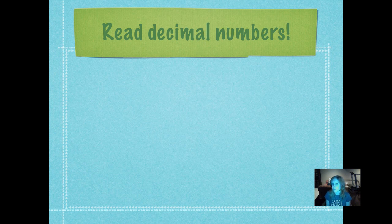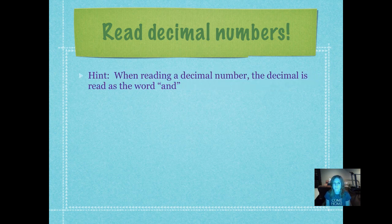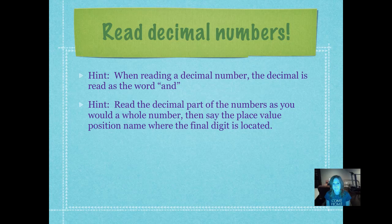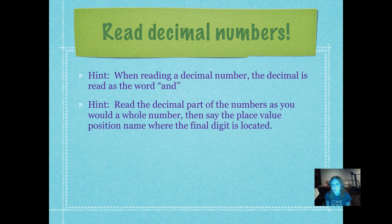We're going to learn how to read a decimal number. Here's a hint: remember when we were doing whole number place value and I said never use the word 'and'? The 'and' actually represents the decimal. So if you say 'and,' you're putting a decimal where it doesn't belong unless you're actually reading the decimal. Here's another hint: on the decimal side, to the right of the decimal, read the decimal part of the number just as you would any whole number. Then whatever place value position the last digit is in, you're just going to say that place value position.